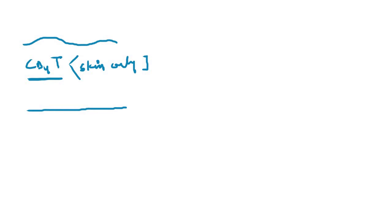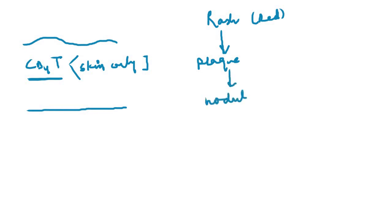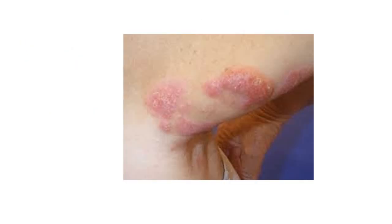First of all there is a non-specific rash which is red in color, and as the rash develops it will evolve into a plaque, and the plaque will further evolve into what is called a nodule. So in mycosis fungoides the skin lesion progresses from rash to plaque to nodule.